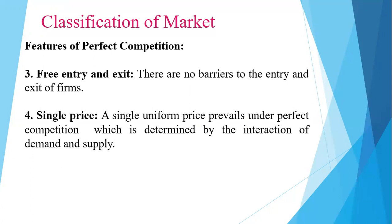The next feature is single price. A single uniform price prevails under perfect competition, which is determined by the interaction of demand and supply. The single firm takes its price from the industry and is consequently referred to as a price taker. The market price is where market demand equals market supply, and each single firm must charge this price and cannot diverge from it.